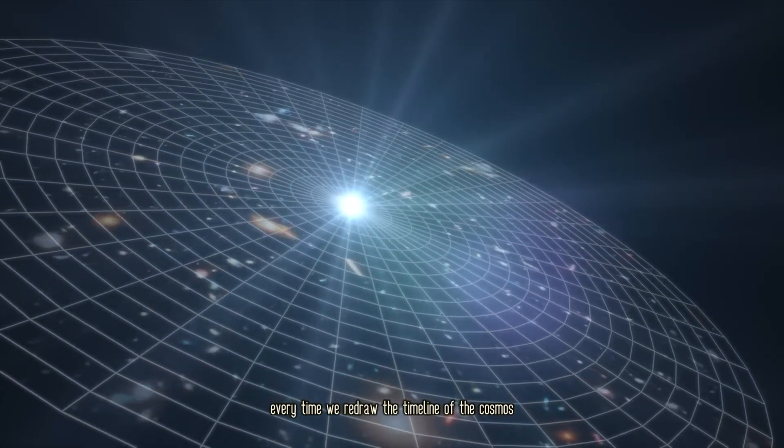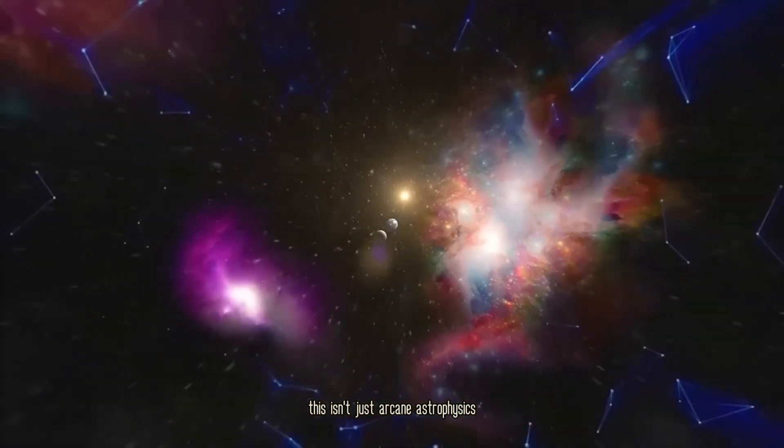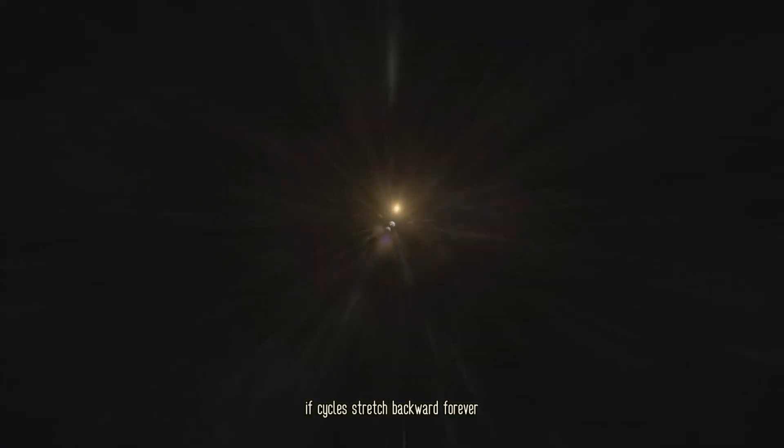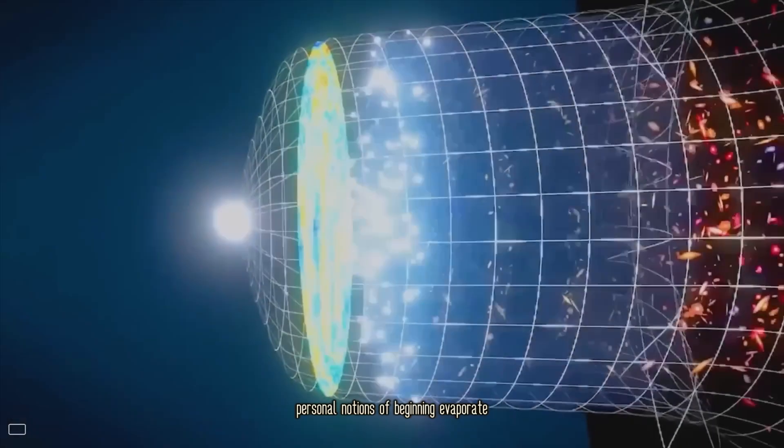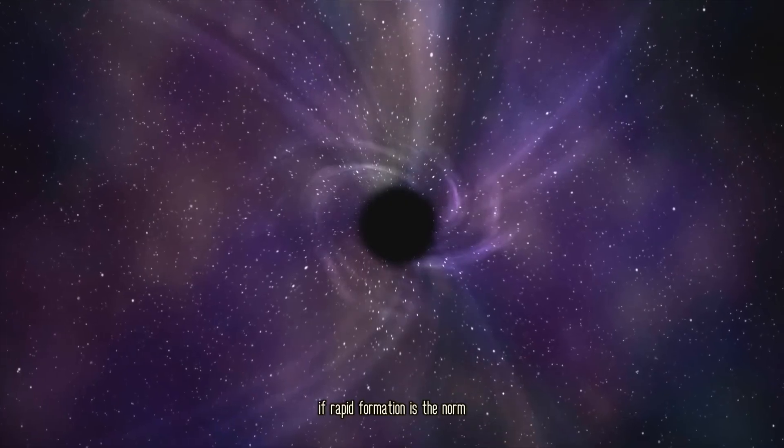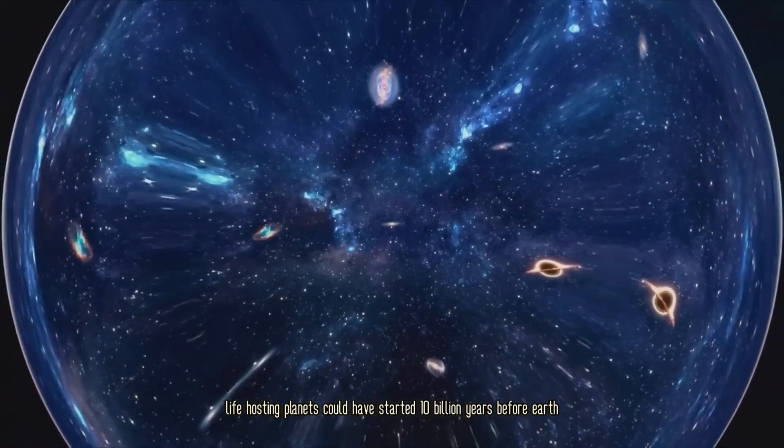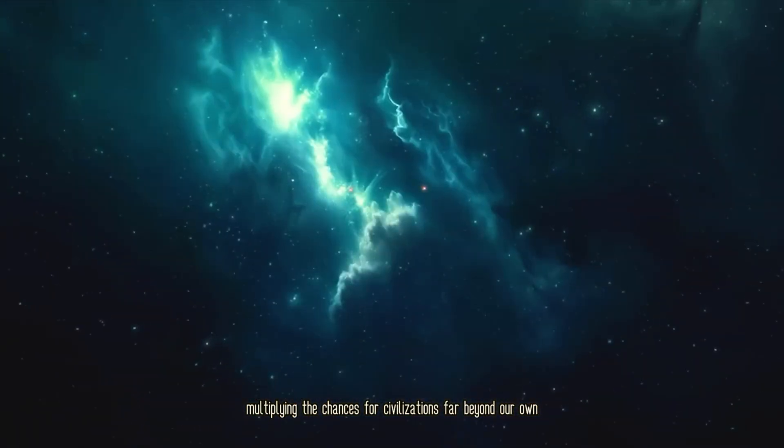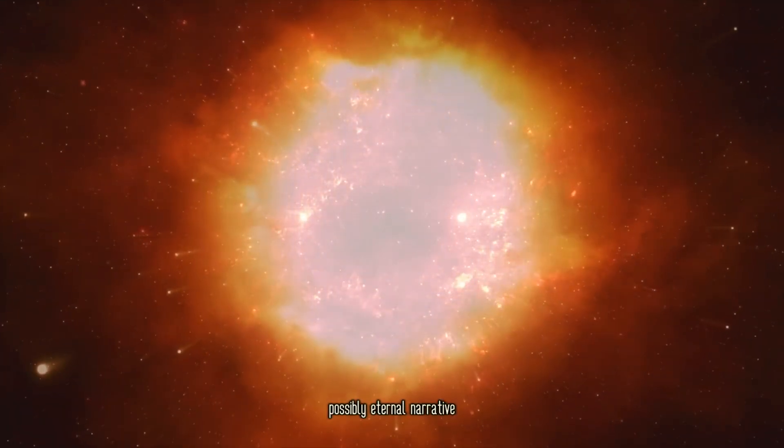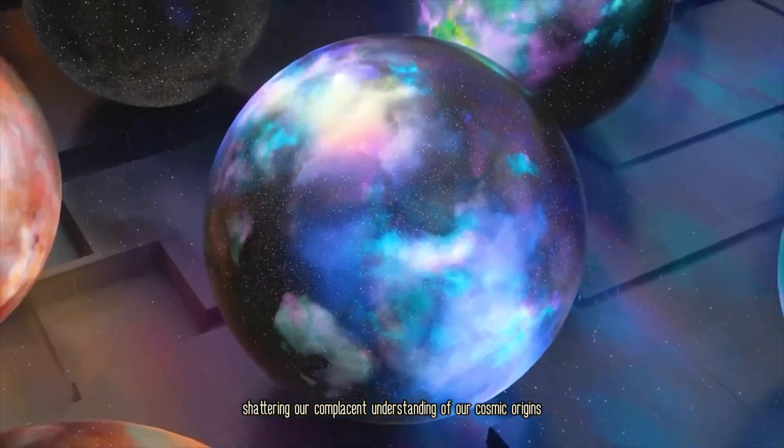Every time we redraw the timeline of the cosmos, we also redraw the odds of existence. This isn't just arcane astrophysics, it's a cultural inflection point as profound as Copernicus moving us out of the center. If cycles stretch backward forever, personal notions of beginning evaporate, and our current universe is just one verse in an eternal refrain. If rapid formation is the norm, life-hosting planets could have started 10 billion years before Earth, multiplying the chances for civilizations far beyond our own. Either answer reframes humanity's place in a much grander, possibly eternal narrative. It compels us to confront a profound mystery, shattering our complacent understanding of our cosmic origins.